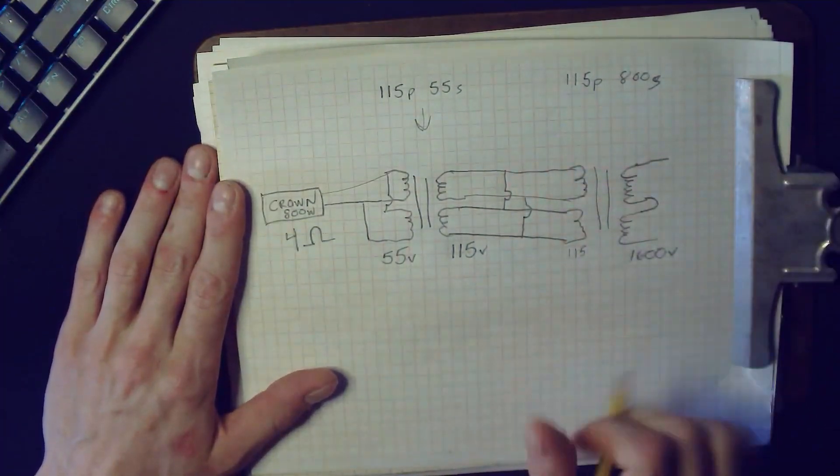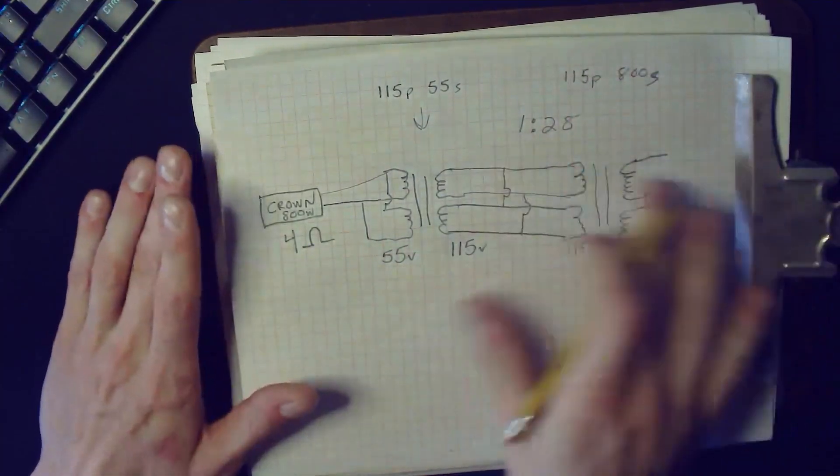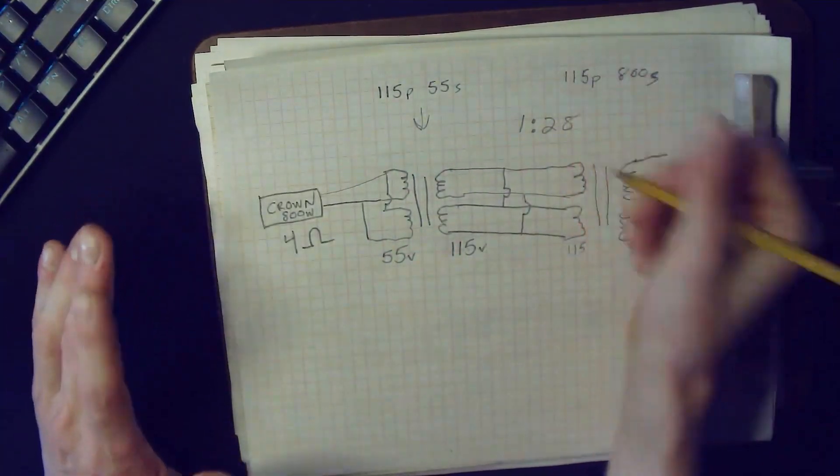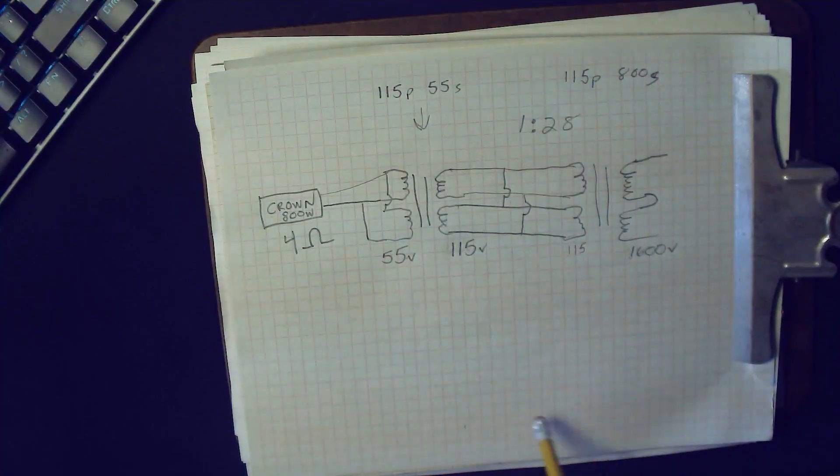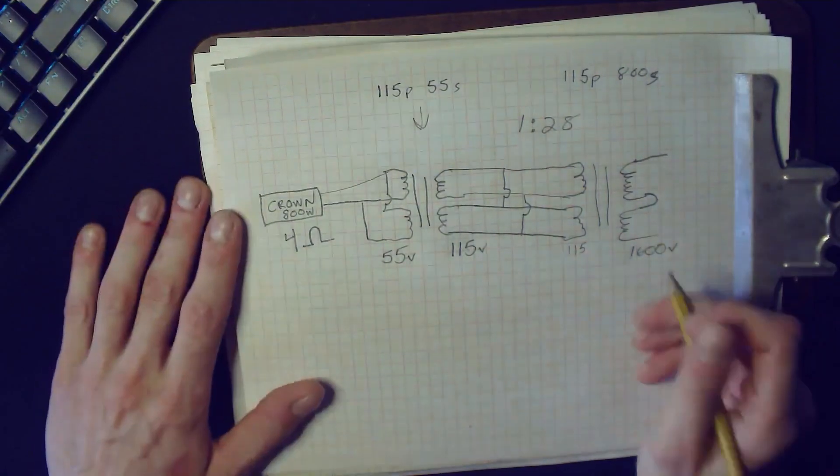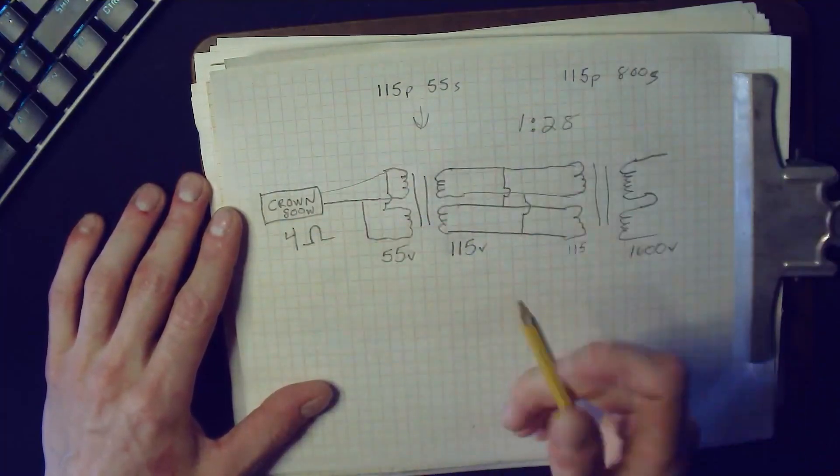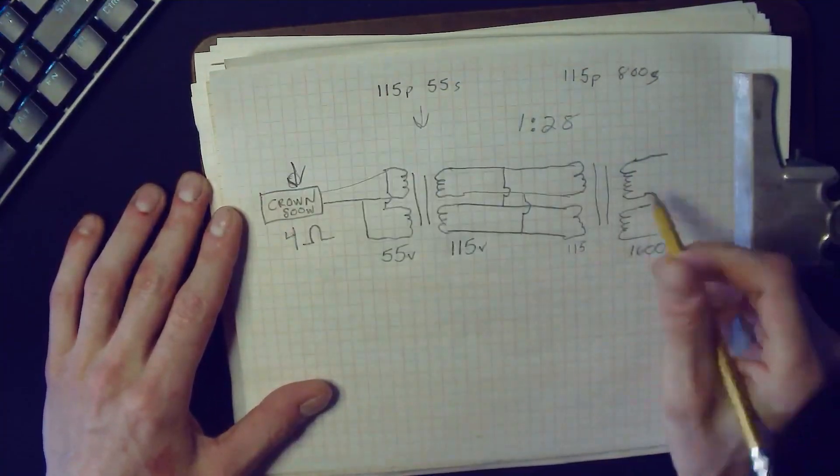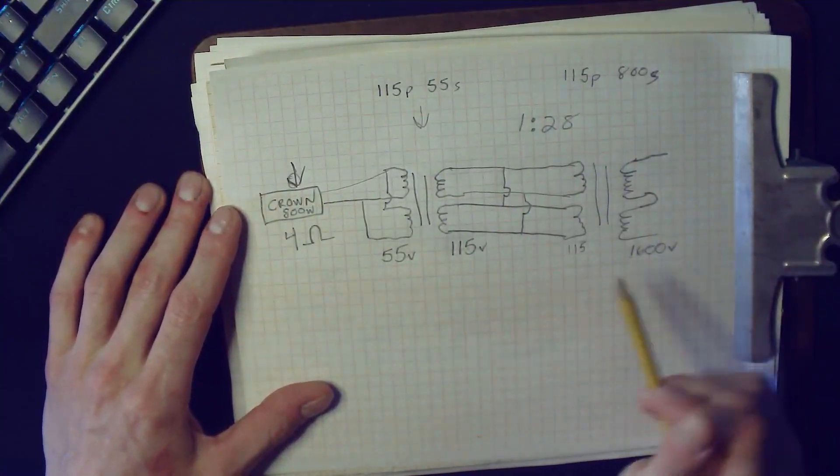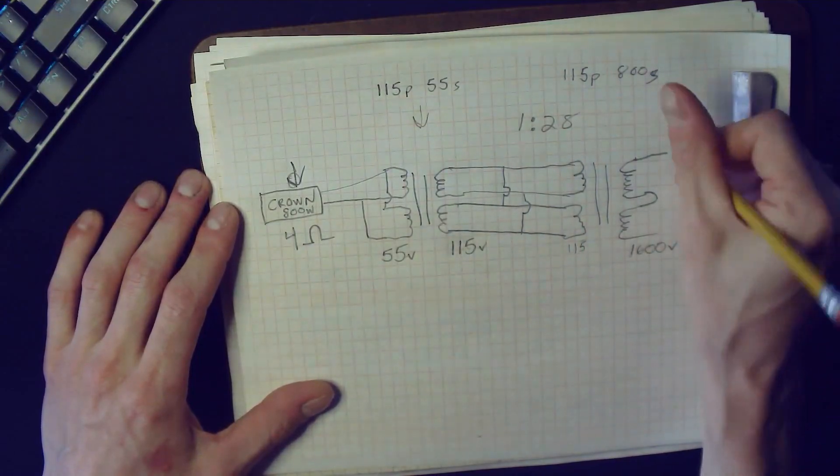So now this is a 1600 volt winding. That ratio, 55 to 1600, is not exactly perfect but somewhere around a 1 to 28 turns ratio, somewhere in there, maybe 1 to 29. It's close to our 1 to 27.3 turns ratio that we want. It's very close. It works.